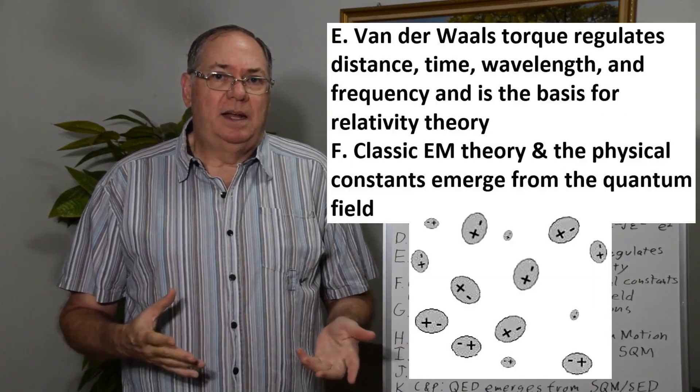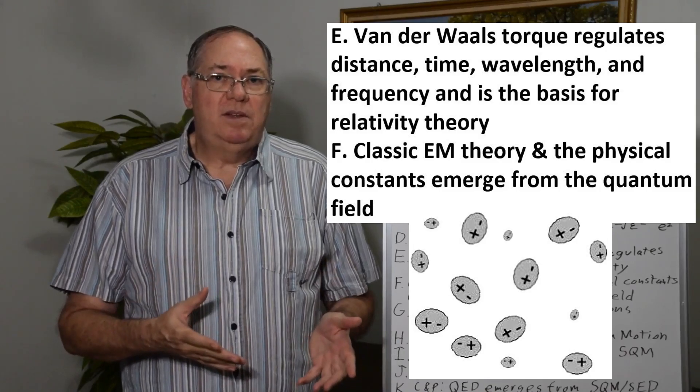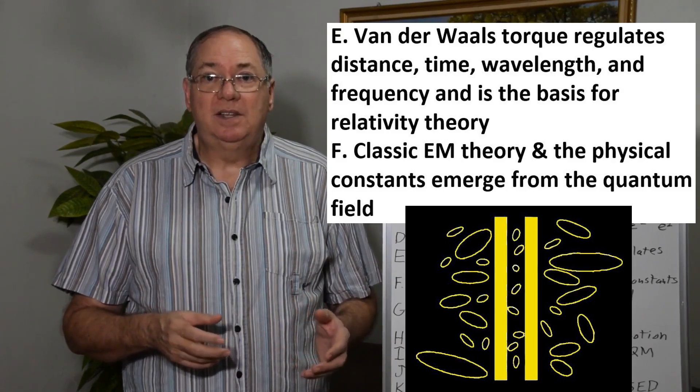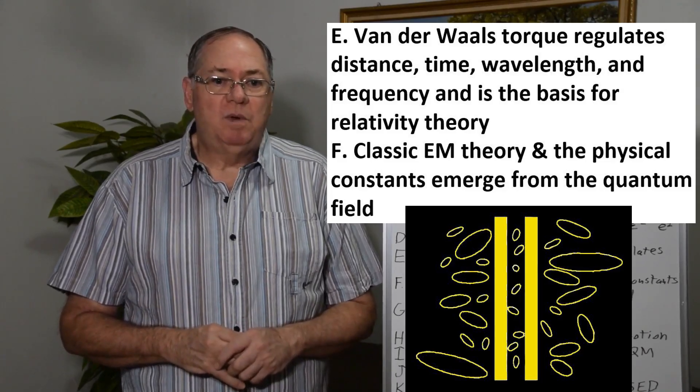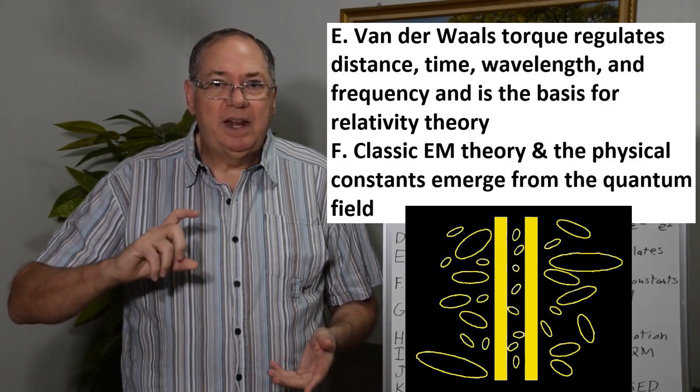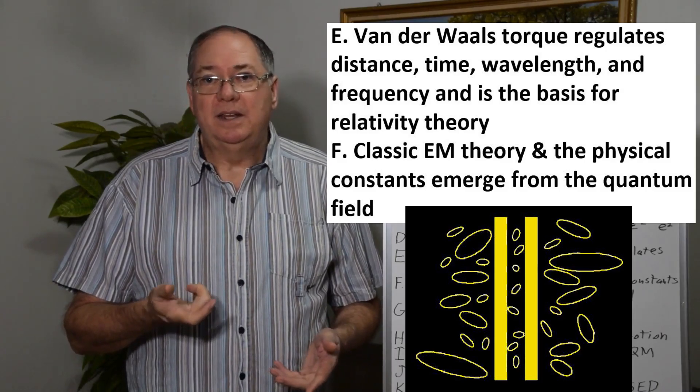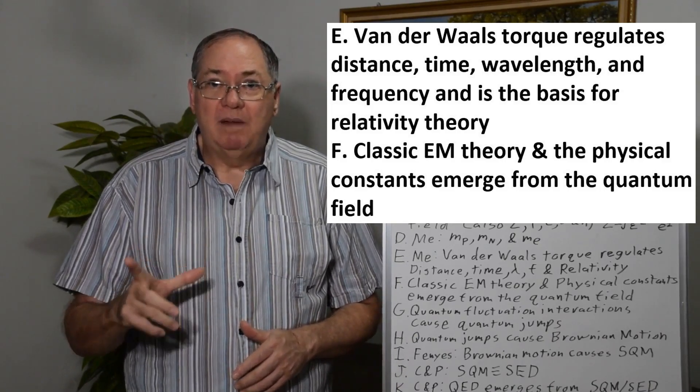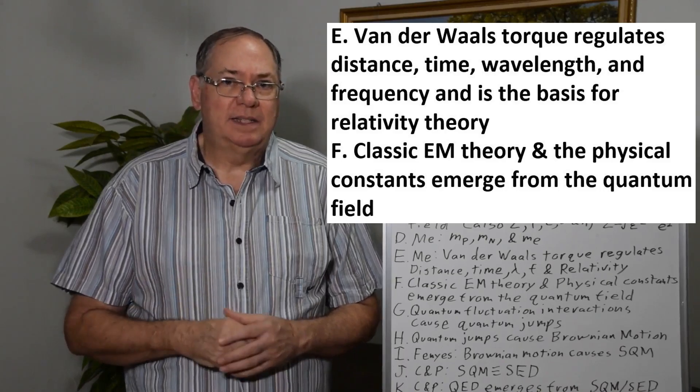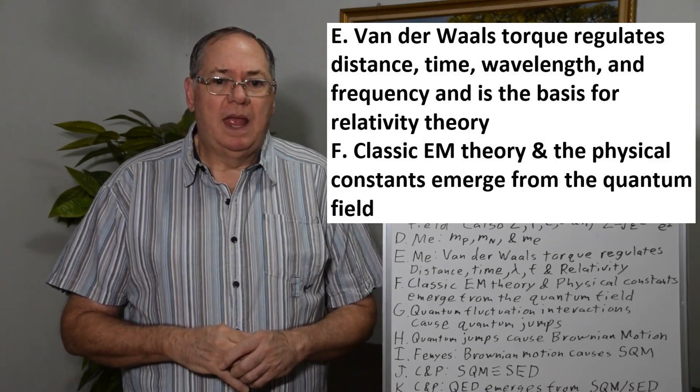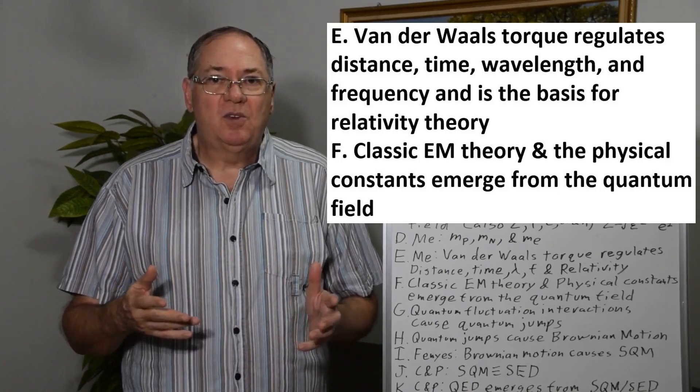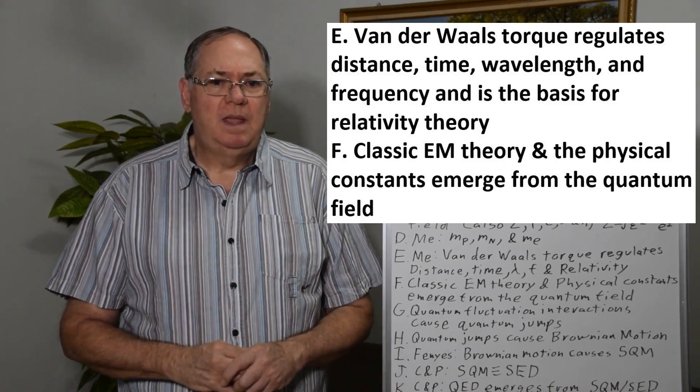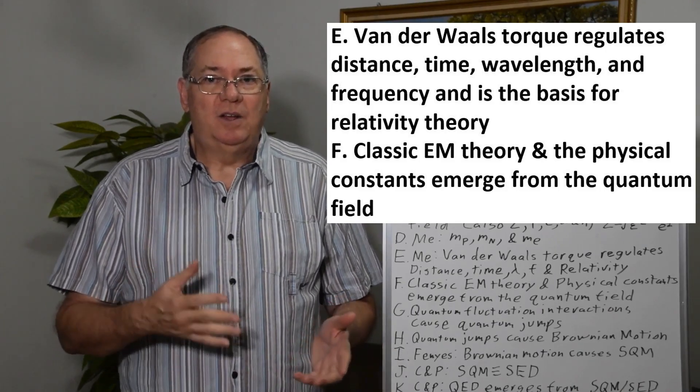Looking back on the quantum field having dipoles, it has the Casimir effect. So there's dipole-dipole interactions of the van der Waals force type, which means there's van der Waals torque, which regulates how rapidly the dipoles can move, given their energy. But it also regulates their wavelength and their frequency, how fast they rotate, which means that the van der Waals torque regulates distance and time throughout space, throughout the quantum field, which means relativity theory also emerges.